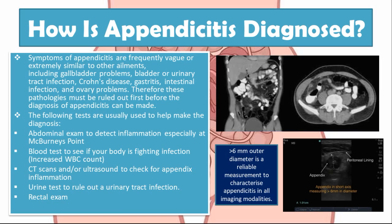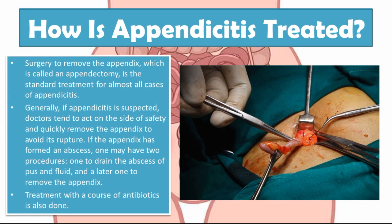Finally, how is appendicitis treated? Surgery to remove the appendix, called an appendectomy, is the standard treatment for almost all cases of appendicitis. Generally, if appendicitis is suspected, doctors tend to act on the side of safety and quickly remove the appendix to avoid rupture. If the appendix has formed an abscess, two procedures may be needed: one to drain the abscess of pus and fluid, and later one to remove the appendix. Treatment with a course of antibiotics is also done.